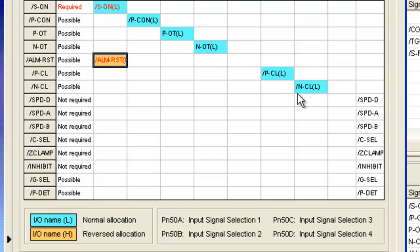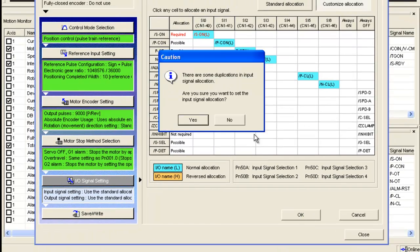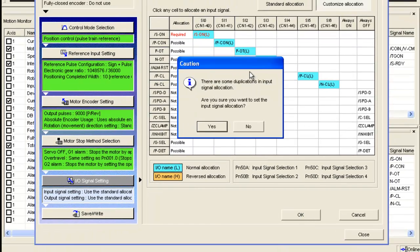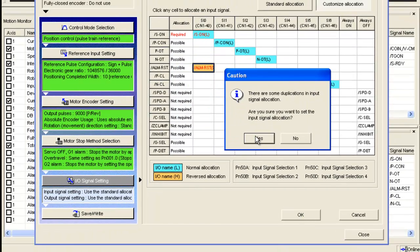That's it for the inputs. The rest will leave at default. Probably not even going to use them according to the wiring diagram. And it's warning me about the duplications here of servo on and alarm reset. Yes, I'm sure.